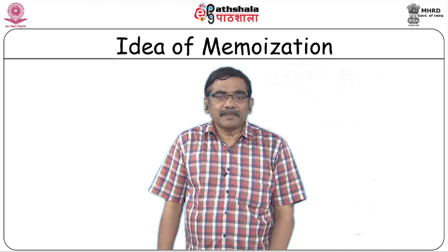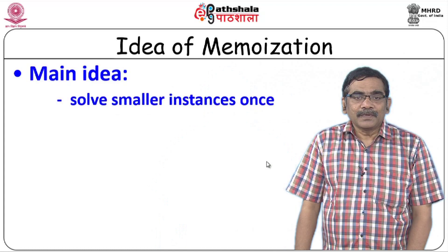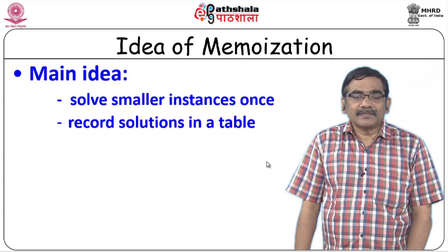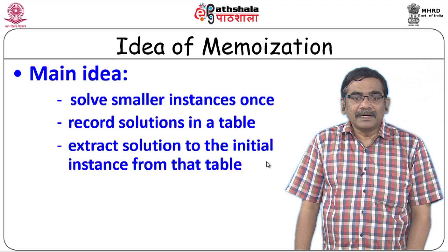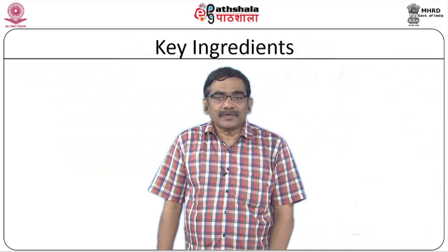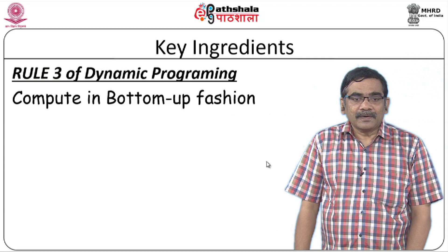If the problems are independent of each other, we prefer divide and conquer, but if they are overlapping we go for dynamic programming. The key principle involved is the idea of memoization — a variant of memorization — where we use a table. We solve the smaller instances first, record solutions in the table, then extract solutions to find answers for the larger instances. This table-oriented bottom-up approach is a characteristic of dynamic programming.